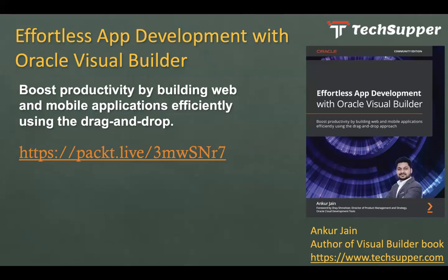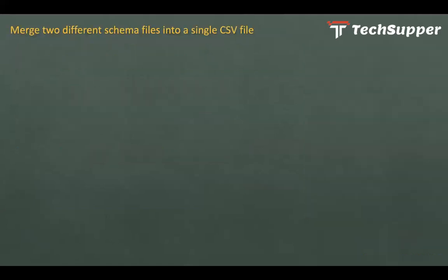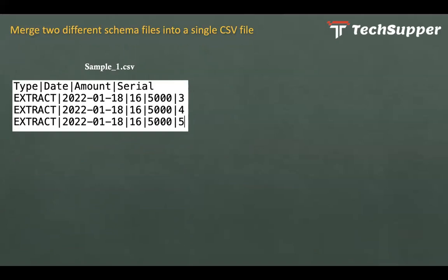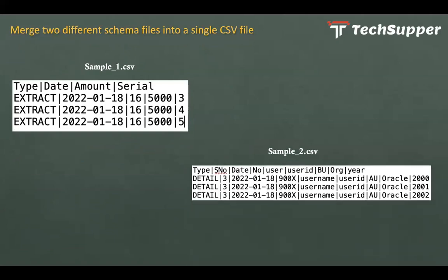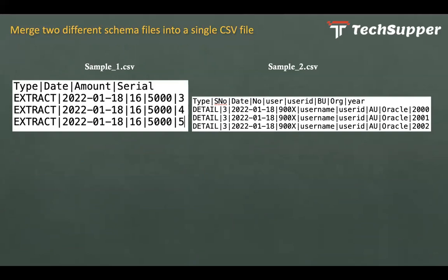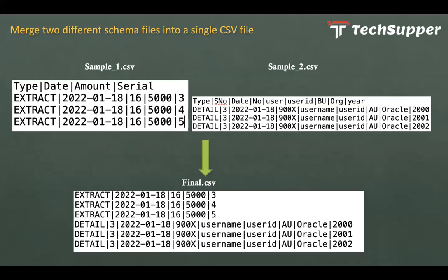Let's get started. Consider a scenario where you have a file with four columns — type, date, amount, and serial. You have another source file with a completely different schema, around nine to ten fields. You want to merge both files and produce a single CSV where sample_one.csv data is on top and sample_two.csv data is at the bottom.